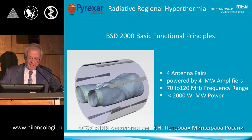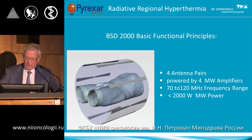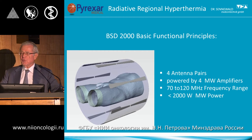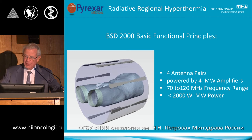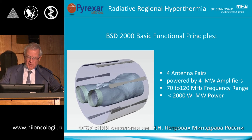Returning to the functional principles: four antenna pairs powered by four microwave amplifiers. The operational frequency range in this applicator — which has a diameter of 60 centimeters — is 70 to 120 megahertz. The power applicable through this applicator into the patient is up to 2,000 watts.